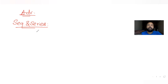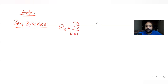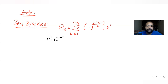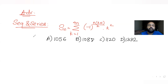Today's question is from the year 2015. The question says: Sn is the sum of the terms from k equal to 1 to 4n, of (−1)^(k(k+1)/2) · k². We have to find the values Sn can take from the given options: 1056, 1088, 1120, and 1332. This is a multiple correct answer question, so there can be more than one correct answer.